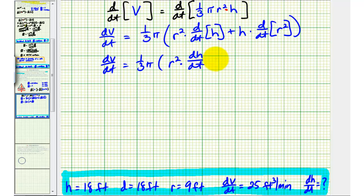Remember this is what we're trying to solve for, plus h times the derivative of r squared with respect to t would be two times r to the first, or just 2r times a factor of dr/dt.